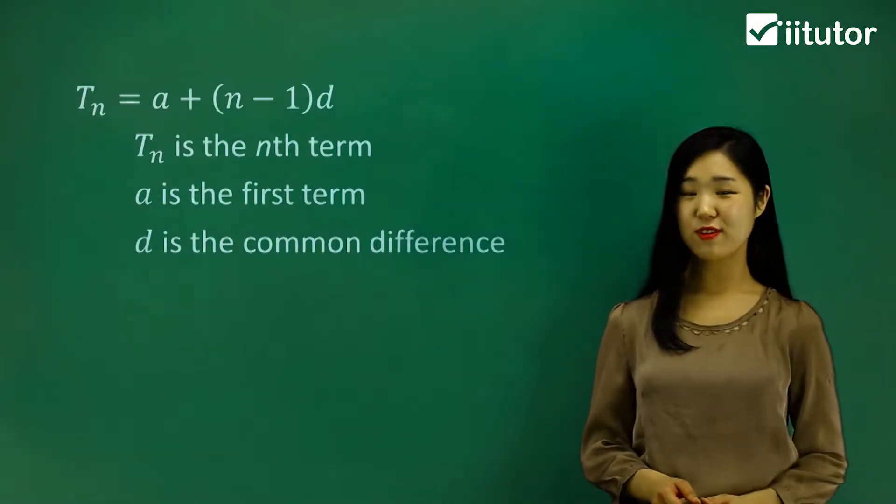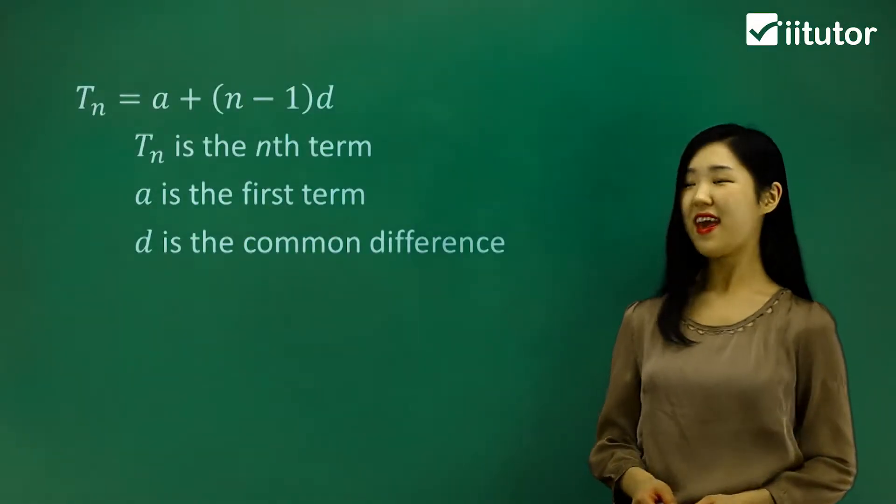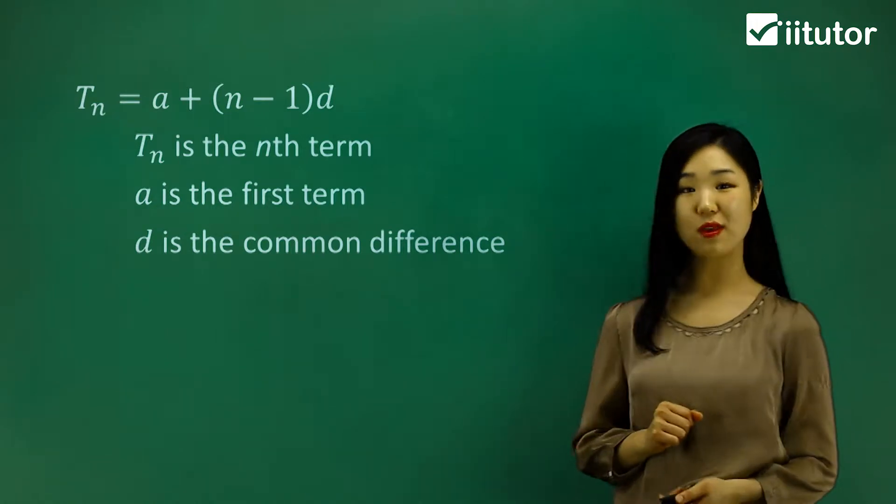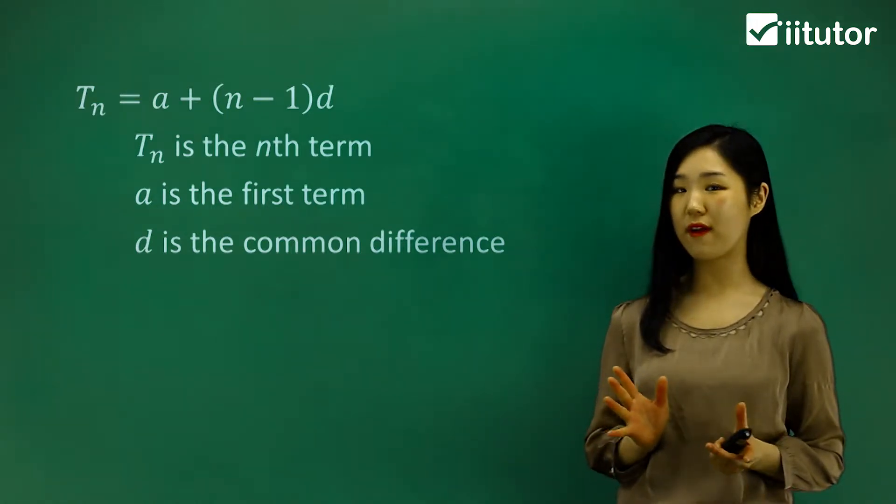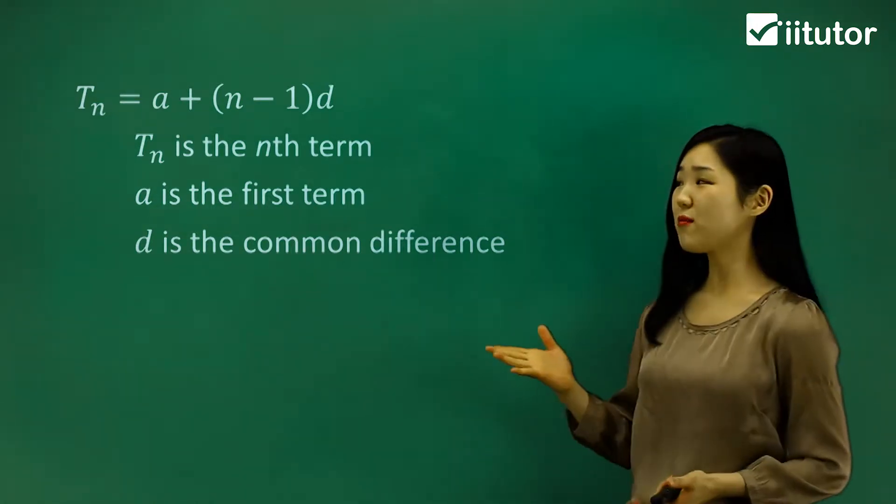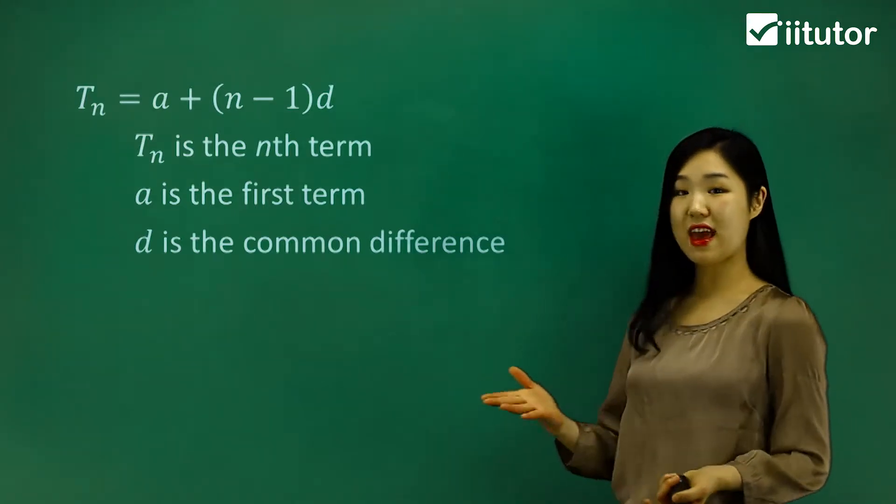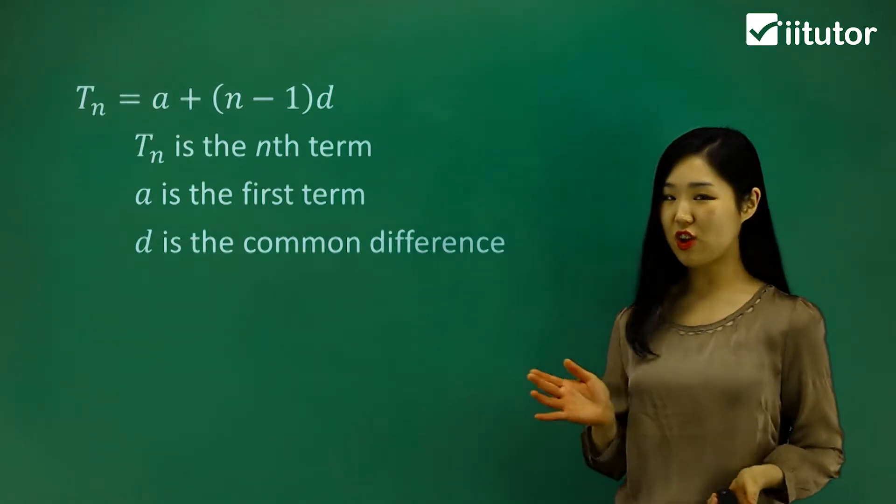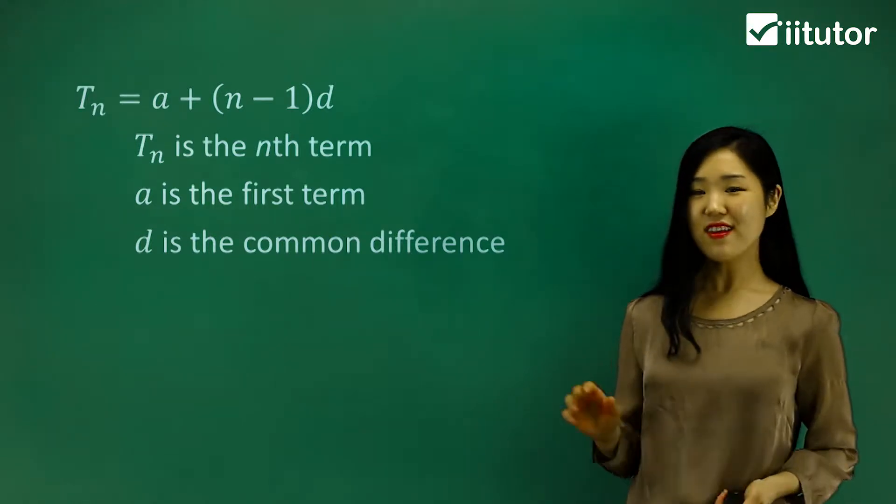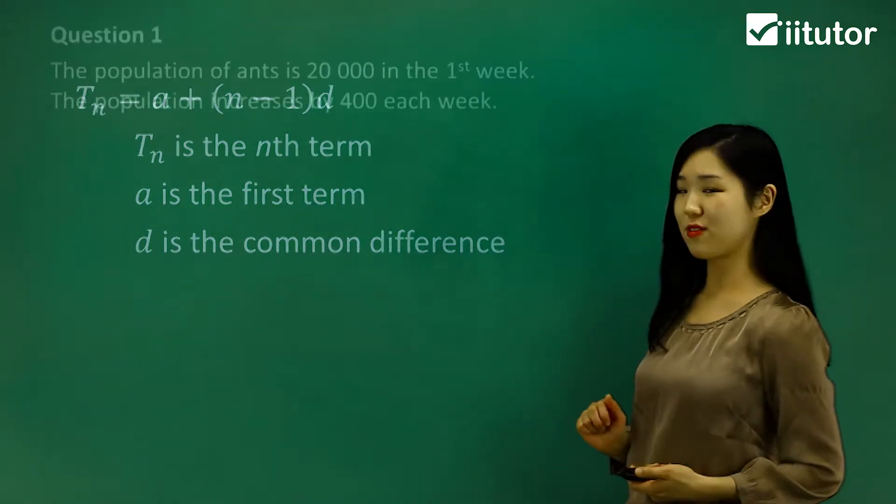Let's look at some application questions using arithmetic sequence. This is the formula we're going to be using, the tn formula, where tn is the nth term. Make sure you remember this: tn equals a plus (n minus 1)d, where a is the first term and d is the common difference. Let's use that to try some application questions.